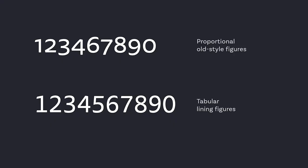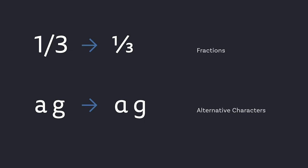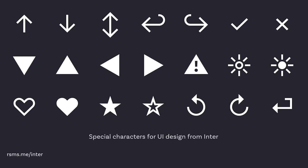Third, OpenType features and figures. What different kinds of numbers do you need? For example, proportional old style figures fit nicely in reading text, but tabular lining figures are better for user interfaces because every number has the same width. There are also OpenType features like fractions for scientific or number-based information, and alternate characters. And last but not least, maybe you want to use some symbols or UI icons — in Inter, for example, you have a lot of icons for user interfaces, so you won't need to load a separate icon font, and the stroke will be consistent with the typeface.